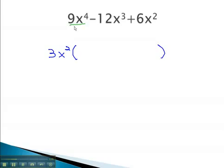To find out what's left inside the parentheses, we will divide each term by 3x squared to see what we have left. Reducing the first fraction, 9 over 3 gives us 3x squared, subtracting the exponents, minus 12 divided by 3 is 4x when we subtract the exponents, plus 6 divided by 3 is 2, and the x squareds divide out.